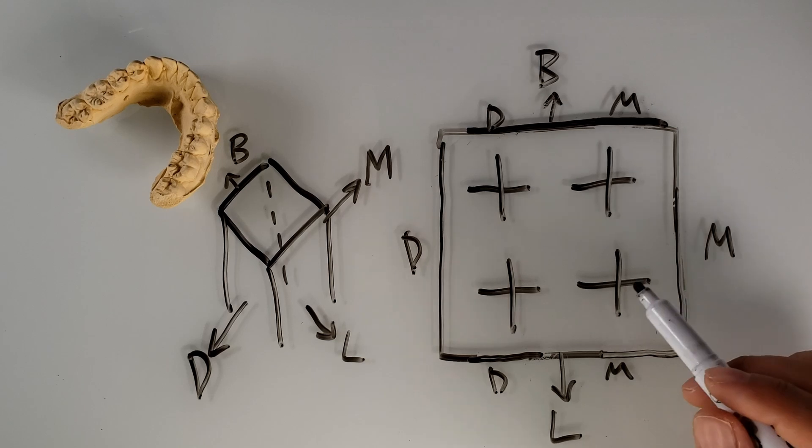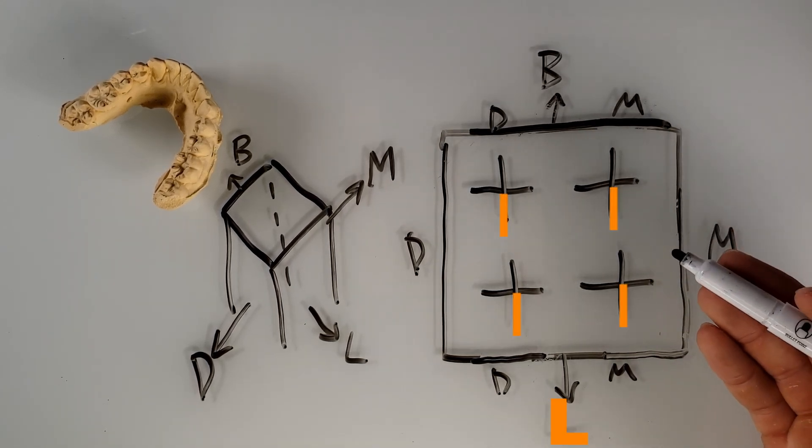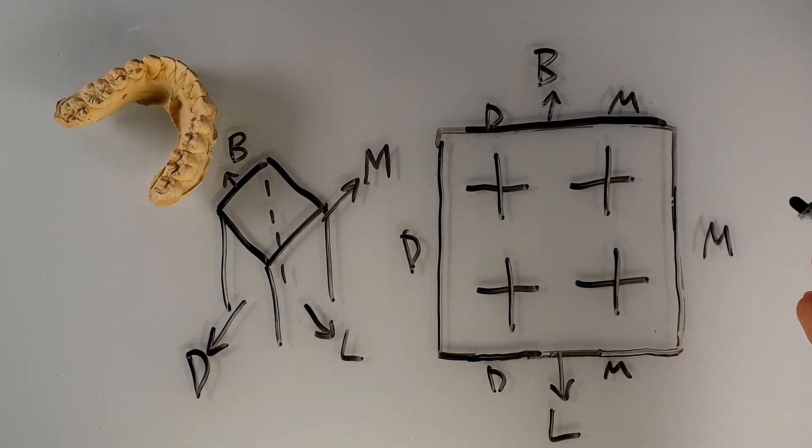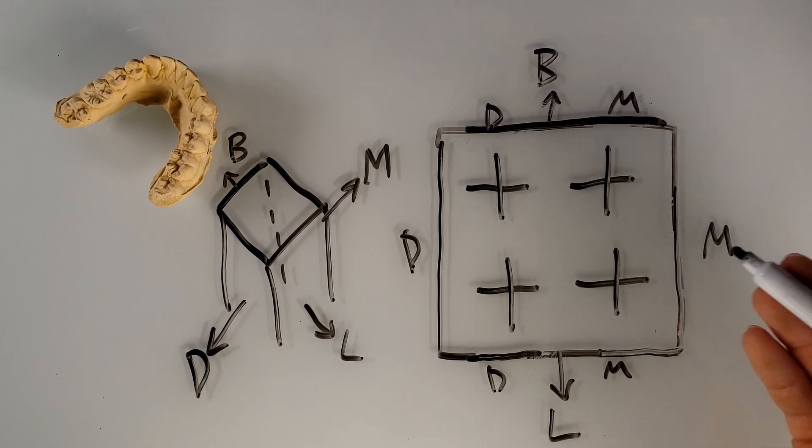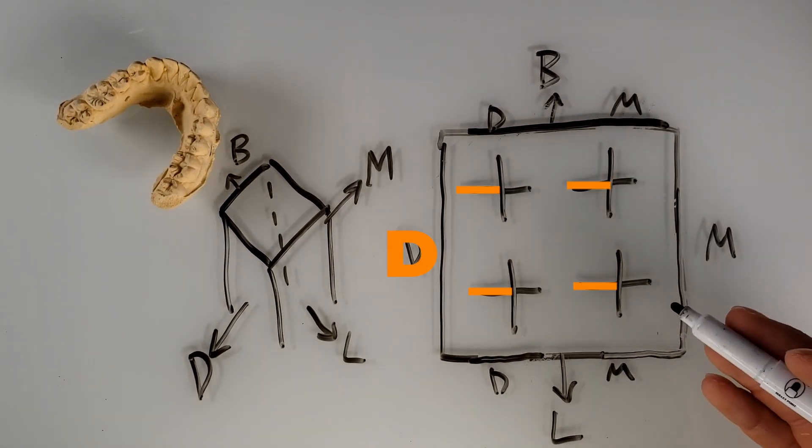Now let's talk about the ridges. We do the same thing as last time. So here are the lingual ridges located on each of the cusps. Here are the buccal ridges located on each of the cusps. Here are the mesial ridges on all the cusps. And here are the distal ridges.